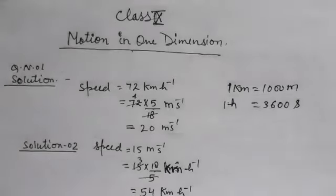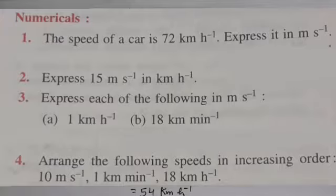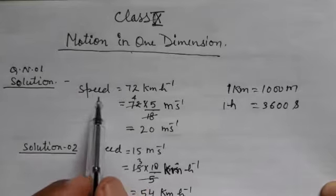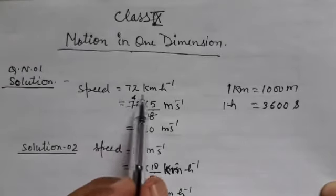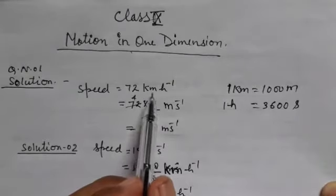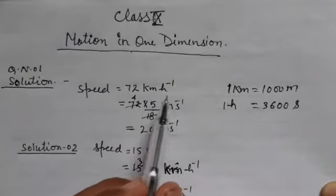Question number 1: The speed of a car is 72 km per hour. Express it in meter per second. Solution of Question number 1: Speed is given as 72 km per hour, and we need to change it into meter per second.